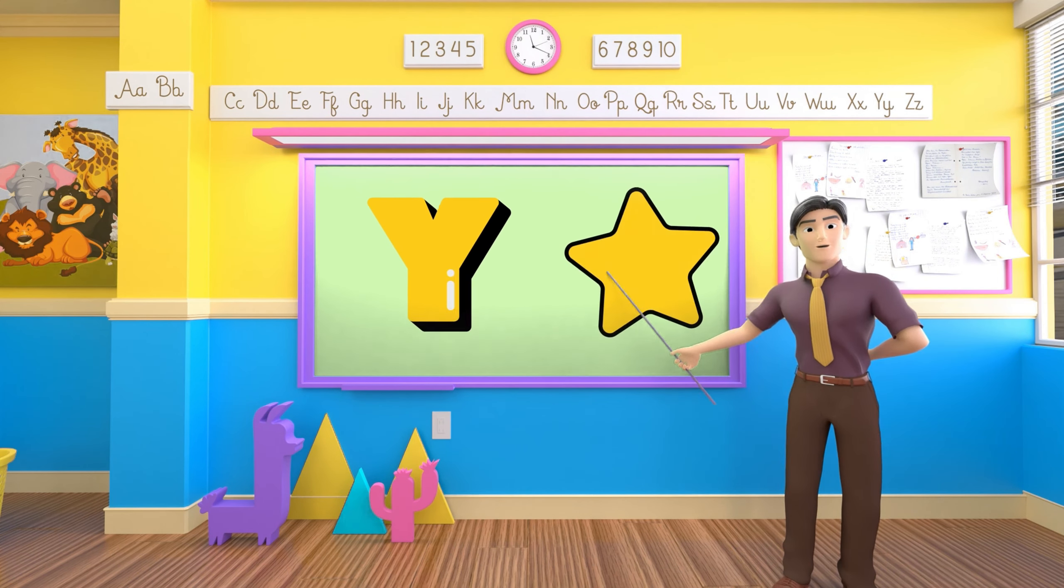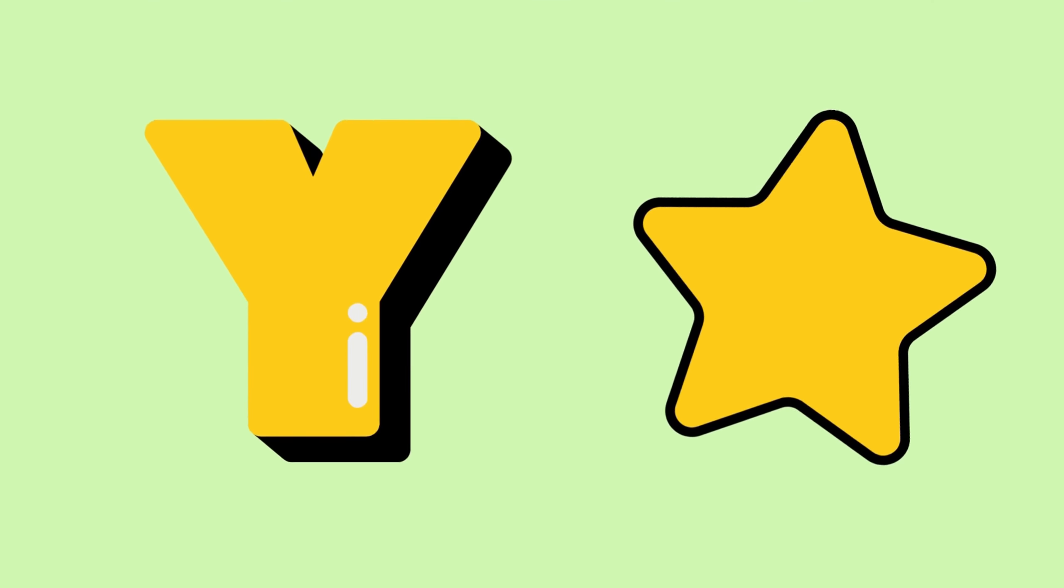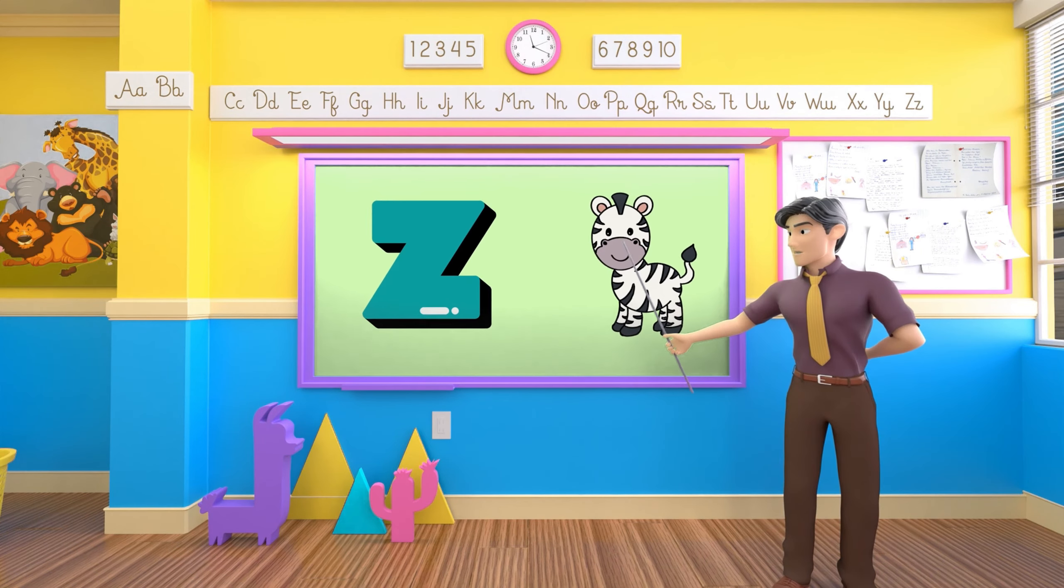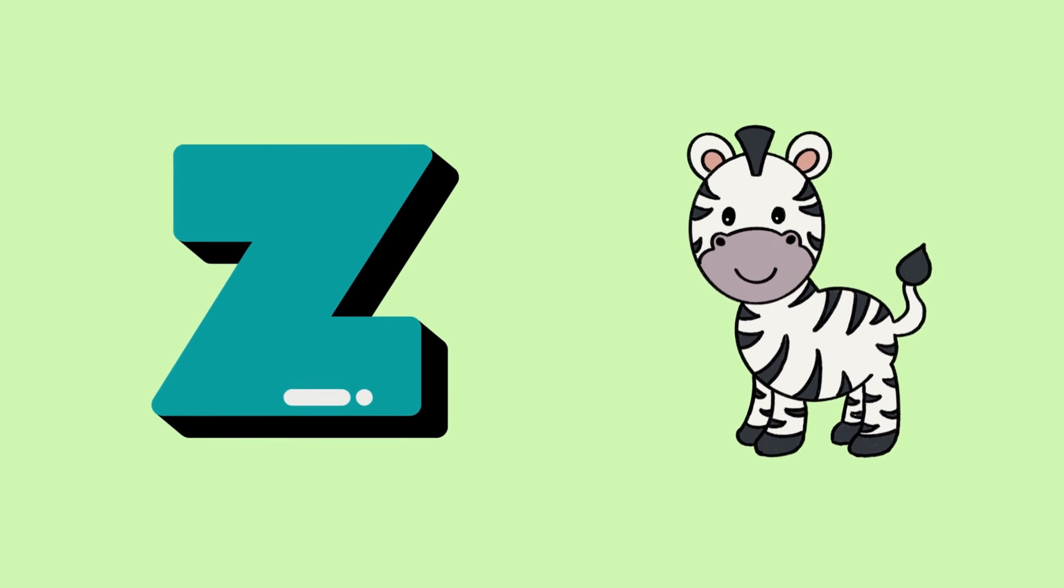Y is for yellow, y-y-yellow. Z is for zebra, z-z-zebra.